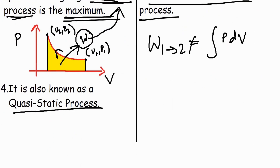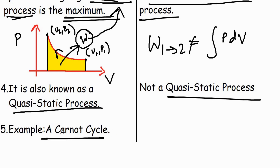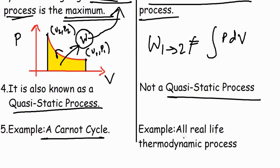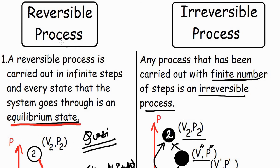An irreversible process is not a quasi-static process. An example of a reversible process is the Carnot cycle, which follows a reversible process. For irreversible processes, all real-life thermodynamic processes are irreversible in nature. Finally, the efficiency of a reversible process is always greater than that of an irreversible process.